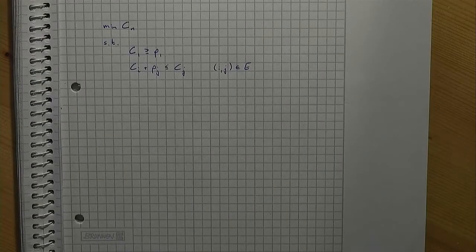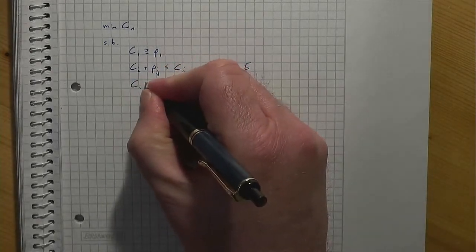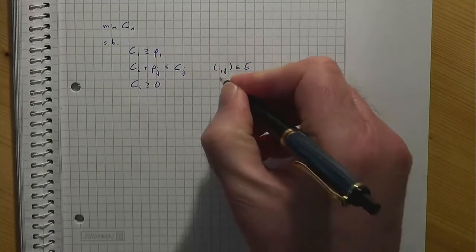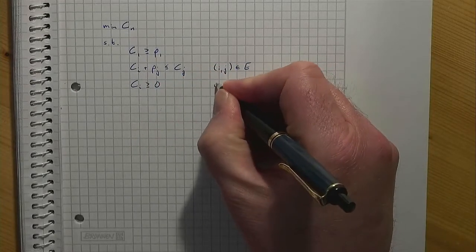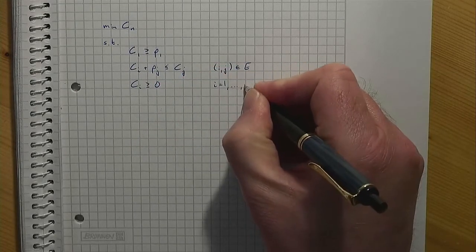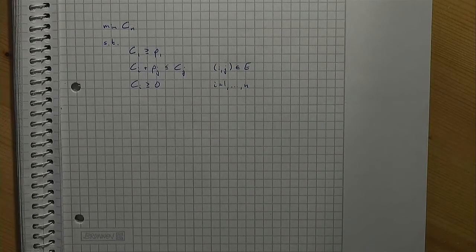The variables c are non-negative. This simple model is a linear program that represents our simple scheduling problem.